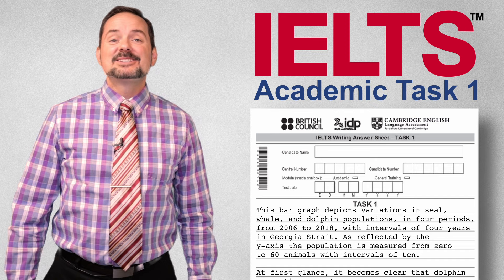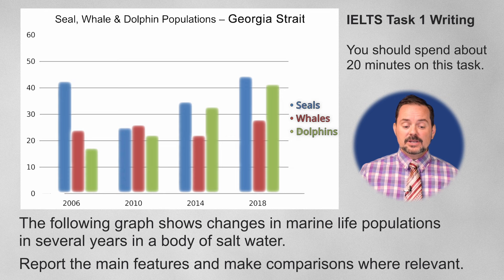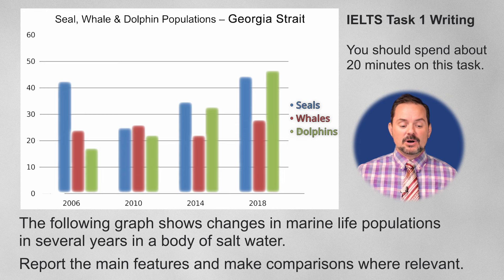IELTS Academic Task 1 Band 9 Bar Graph Walkthrough with Example Essay. The question: you should spend about 20 minutes on this task. The following graph shows changes in marine life populations in several years in a body of salt water.